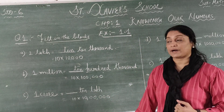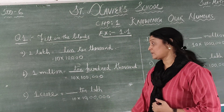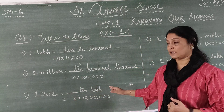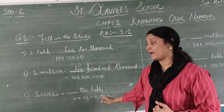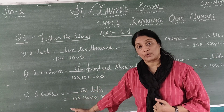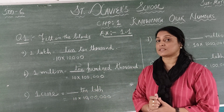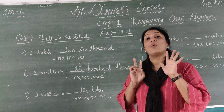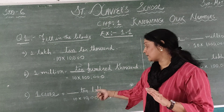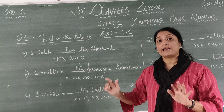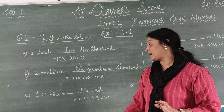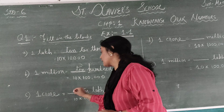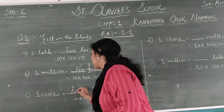Part C: 1 crore is equal to blank times 10 lakh. You have 10 lakh and you need to make 1 crore. How many zeros are in 1 crore? There are 7 zeros in 1 crore. 10 lakh is given, and to make 1 crore you multiply by 10 again. So the answer is 10.